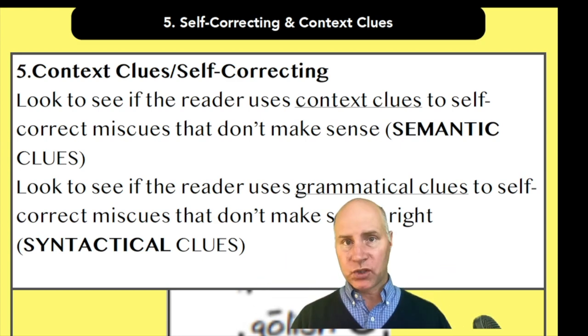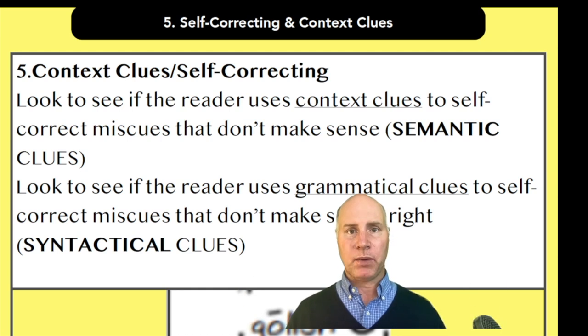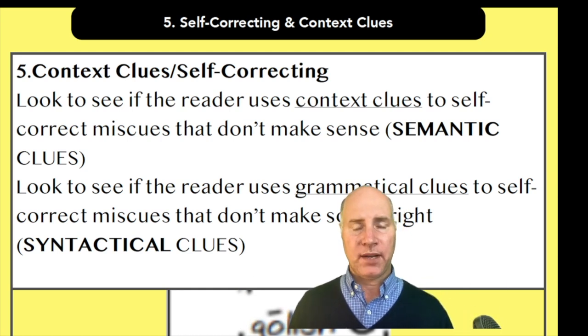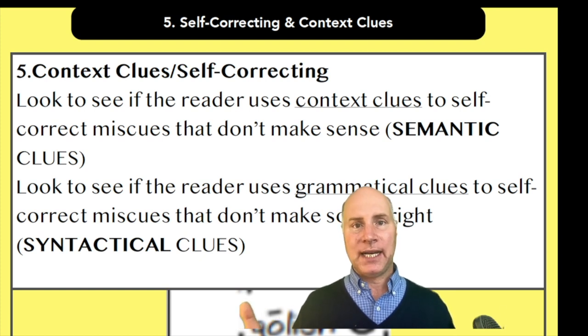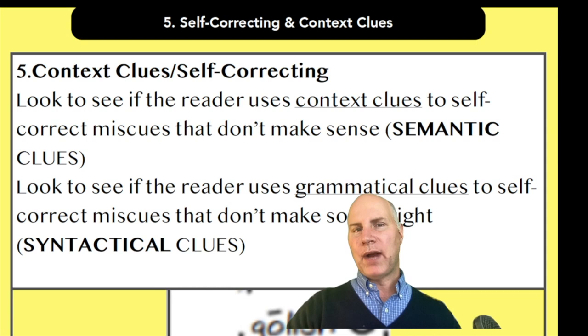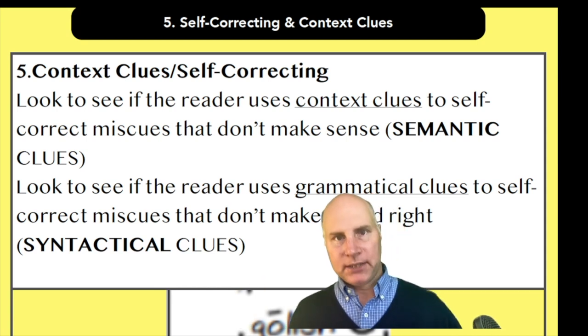Okay, number five. The most common type of skill or strategy that we want students to have—and if they don't have it, this would hold them back in their word identification—is the use of self-correcting and context clues. Self-correcting is really a byproduct of using context clues.